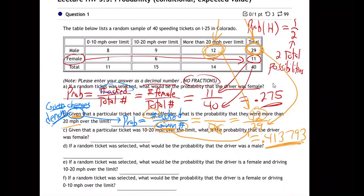Again we're going to do a given. How do we do given? The probability is going to be the given on the bottom, and on the top it's going to be the number asked for. So the number asked over the given number. What's being given in this situation? What does it say is given?